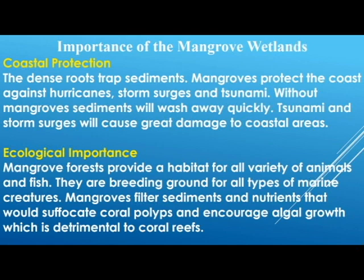The second major importance is ecological. The mangrove forest is a habitat for all living creatures — fish and other marine creatures. They are breeding grounds for different types of marine life; a lot of fish go there to spawn, as well as turtles and other marine creatures. It's an excellent area for spawning because there are no strong tides inside, and there are a lot of nutrients in the mangrove swamp — making it a breeding haven for marine creatures.